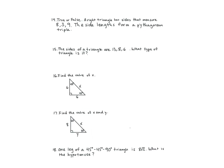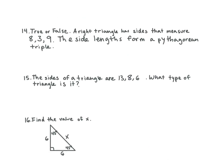True or false? A right triangle has sides that measure 8, 3, and 9. The side lengths form a Pythagorean triple. False. How did you know? Because when you do 8 squared plus 3 squared equals 9 squared, they're not equal. So that's what makes it false.